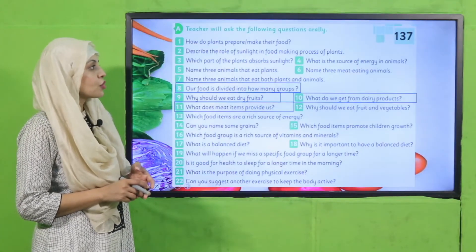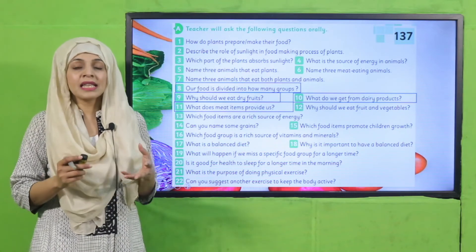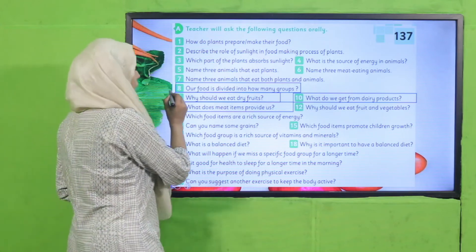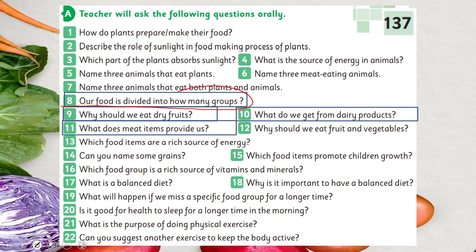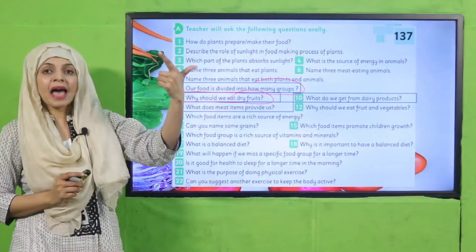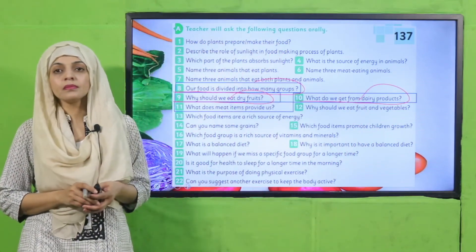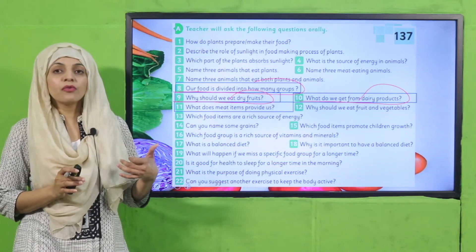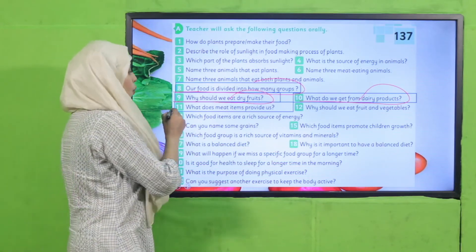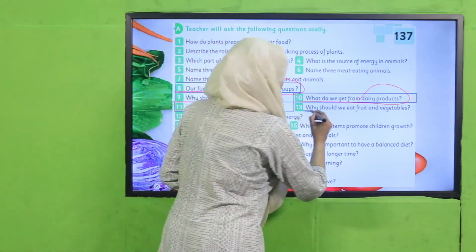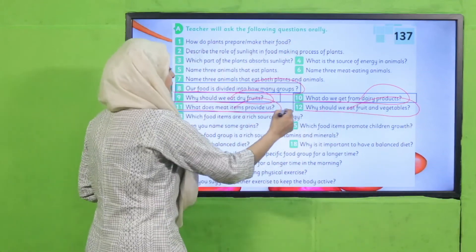Now it's time for evaluation. On page number 137, the listening and speaking questions are given - quickly answer these questions orally. Our food is divided into how many groups? Five primary groups. Why should we eat dry fruits? Because they provide us with minerals and fat. What do we get from dairy products? They provide us with minerals and protein. What do meat items provide us? They provide us with proteins. Why should we eat fruits and vegetables? This will be done in the next lecture.